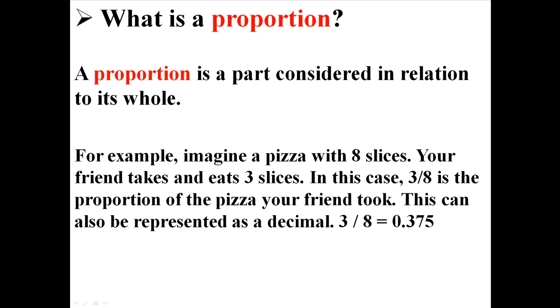Like for example, imagine a pizza with eight slices. Your friend takes and eats three slices. In this case, three eighths is the proportion of the pizza your friend took. This can also be represented as a decimal. Like three divided by eight equals 0.375. That number is a proportion.